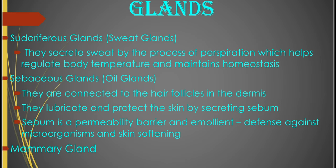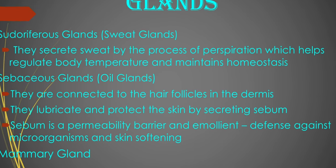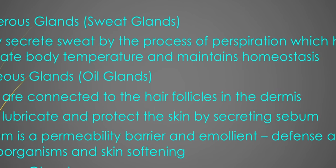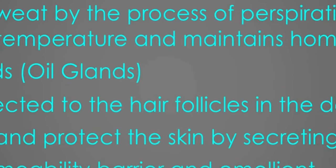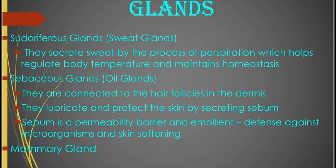The mammary gland is one important epidermal derivative that distinguishes mammals from other vertebrates — that is why they are called mammals. Though the mammary glands, as well as the sebaceous and sweat glands, are also peculiar to mammals. The mammary glands are very important epidermal derivatives that are important in feeding the young ones. The mammary glands are actually modified apocrine sweat glands.